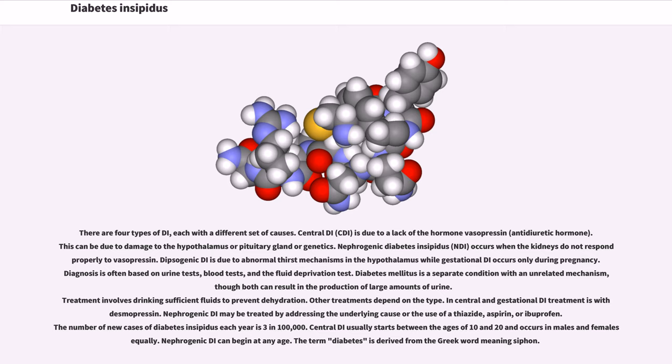Diabetes mellitus is a separate condition with an unrelated mechanism, though both can result in the production of large amounts of urine. Treatment involves drinking sufficient fluids to prevent dehydration. Other treatments depend on the type. In central and gestational DI treatment is with desmopressin. Nephrogenic DI may be treated by addressing the underlying cause or the use of a thiazide, aspirin, or ibuprofen. The number of new cases of diabetes insipidus each year is 3 in 100,000. Central DI usually starts between the ages of 10 and 20 and occurs in males and females equally.